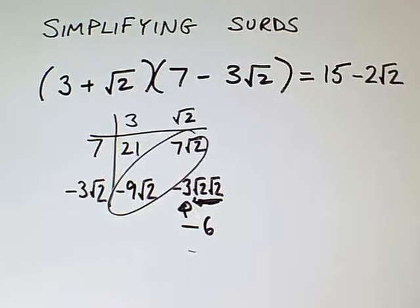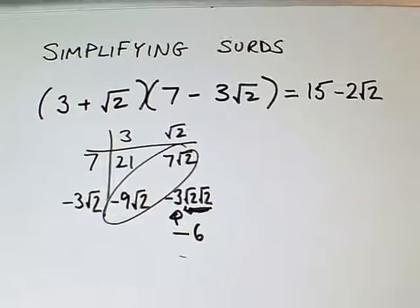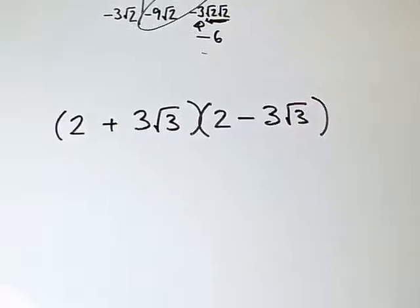So that's how to multiply out brackets with surds. One more example because there's an interesting pattern when we've got this kind of thing going on.